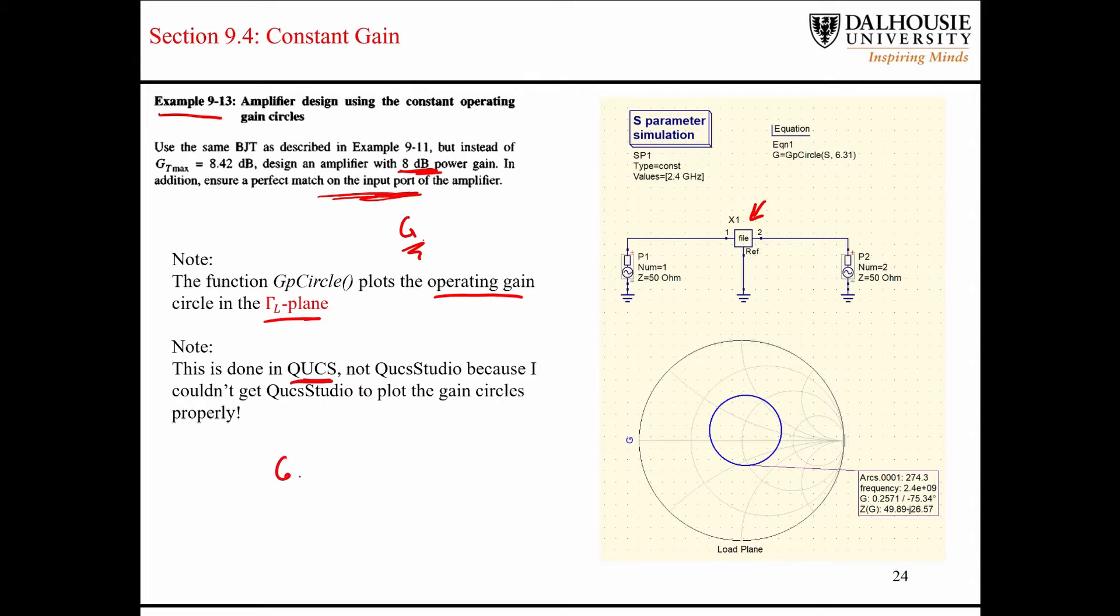Just note that there's another function called GACircle, and it plots GA in the gamma S plane. So when we're talking about the design of low noise amplifiers and the use of noise circles, then we're going to want to use this function here. But for this problem, they're asking us to design an amplifier with 8 dB of gain, and they want a perfect match on the input port side here.